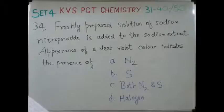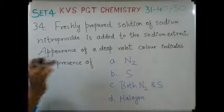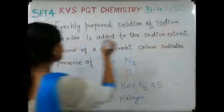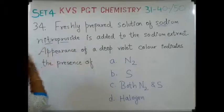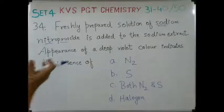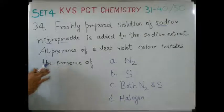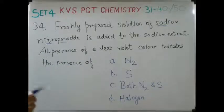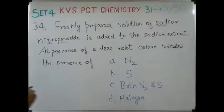The next question: a freshly prepared solution of sodium nitroprusside is added to sodium extract. Now if a deep violet color appears, what does it indicate? It indicates the presence of sulphur. So the correct answer is B — sulphur.